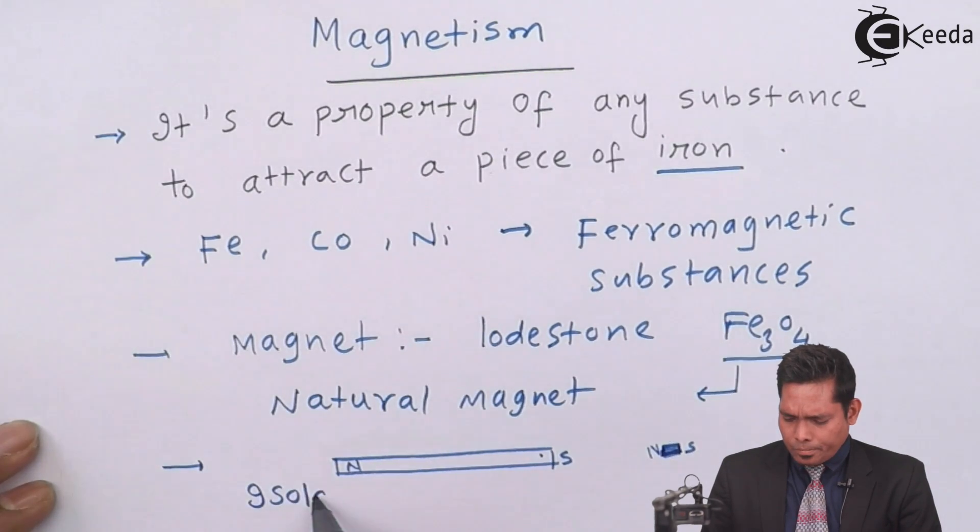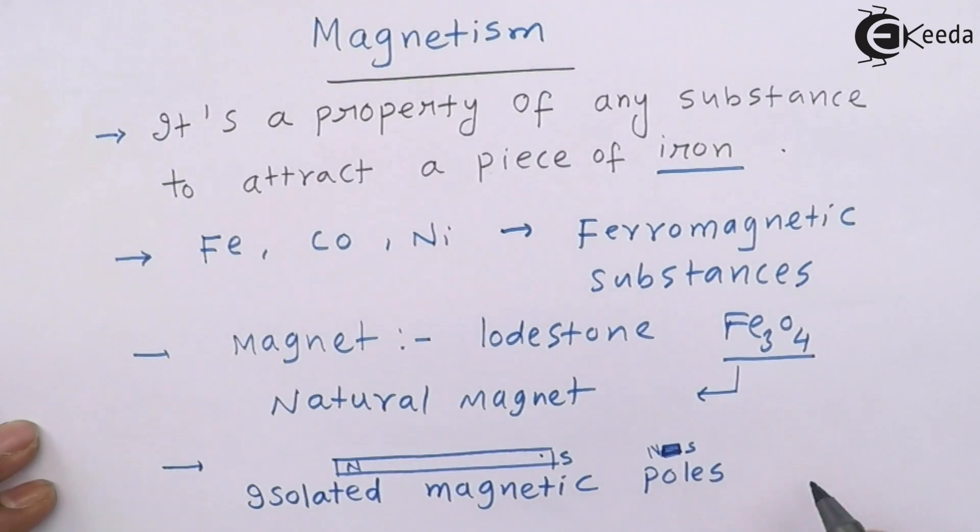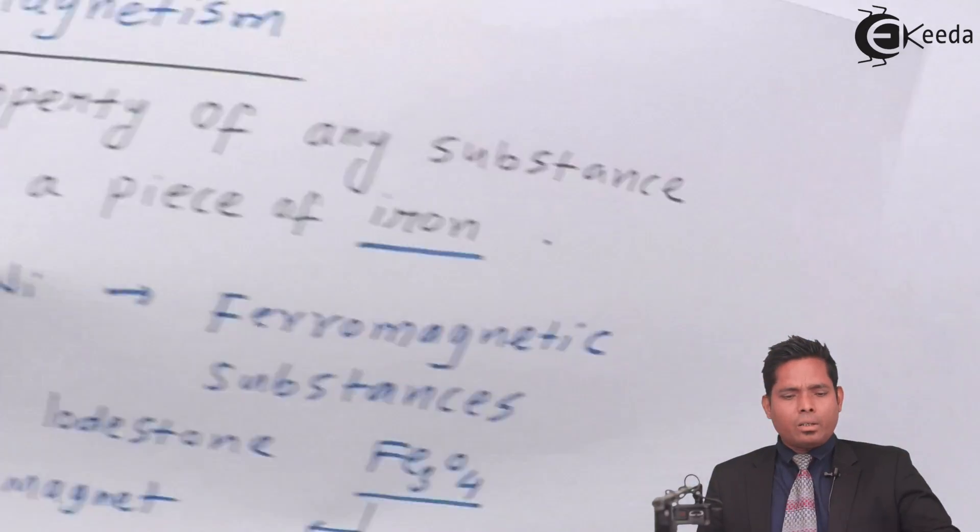Isolated pole does not exist. You cannot have a separate north pole or separate south pole. You cannot bring only north pole or you cannot bring only south pole. If you bring a magnet, it has to be both the poles together. You will find both of them.